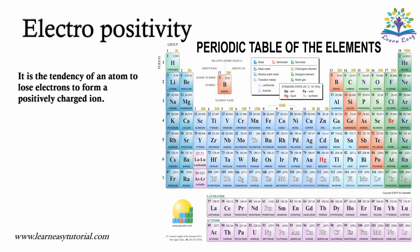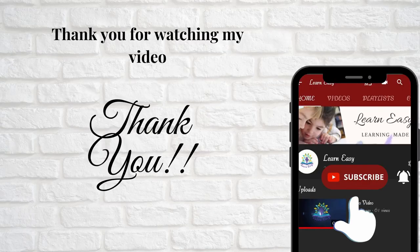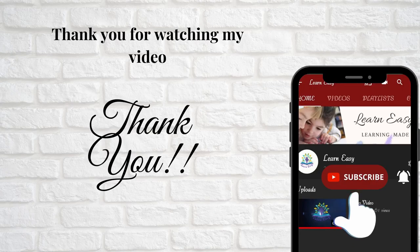To summarize: electropositivity is a tendency of an atom to lose electrons to form a positively charged ion. Down a group, electropositivity increases, and across a period, electropositivity decreases. If you found this video useful, please click like, share and subscribe. Thank you. Bye-bye.